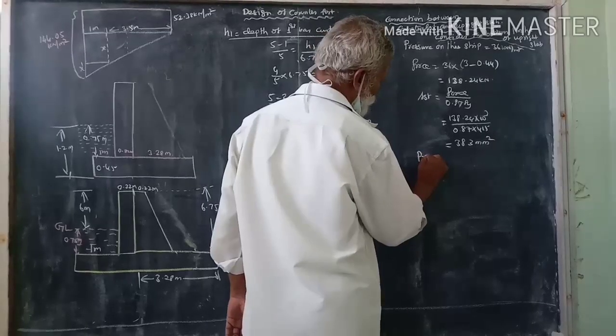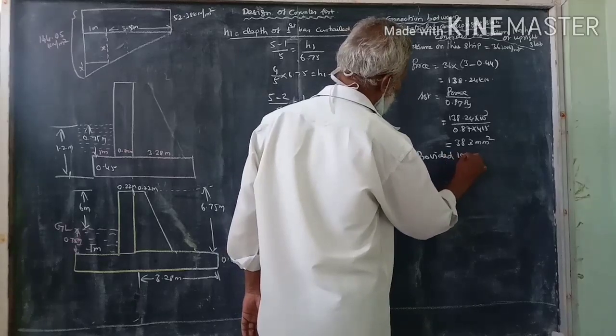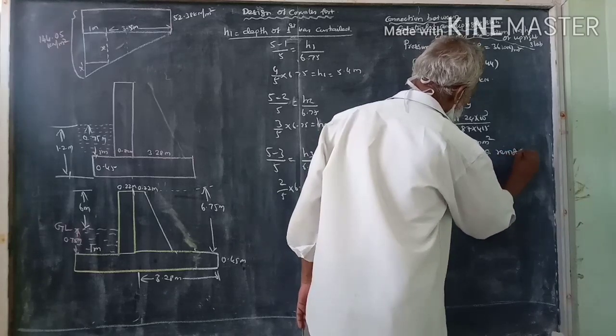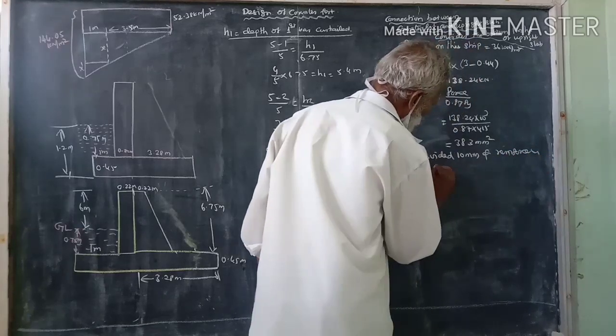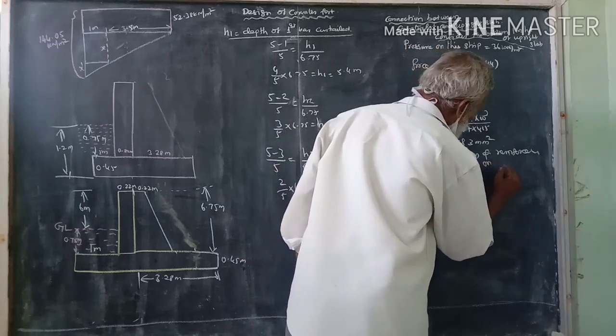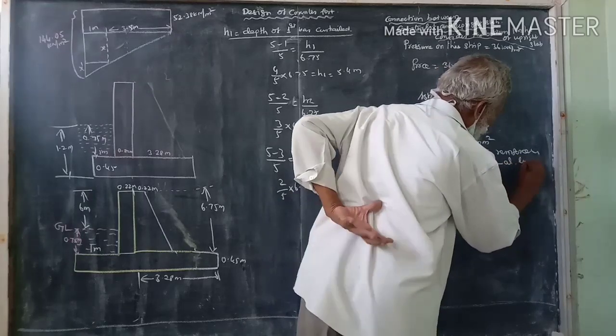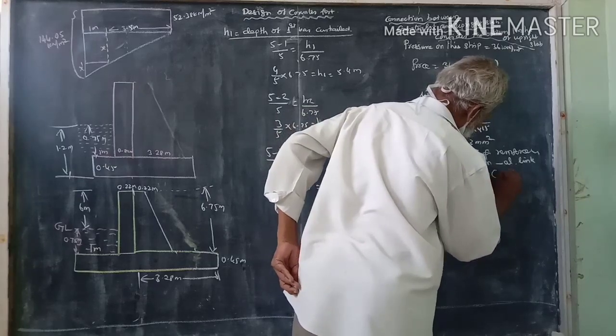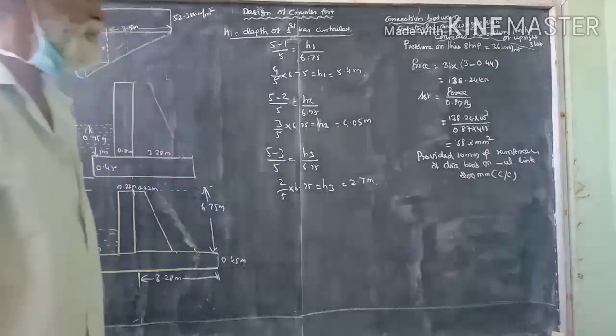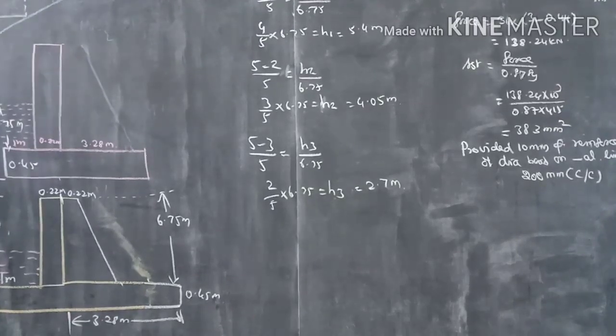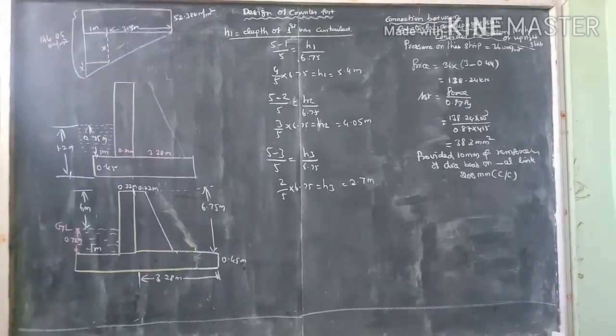Right at 10 millimeter reinforcement of dowel, reinforcement of dowel, and the horizontal link. Where is the link? Link 200 center to center 200, 1 meter center.